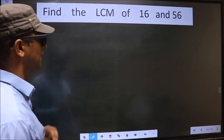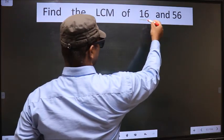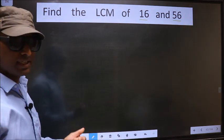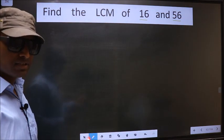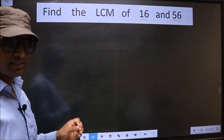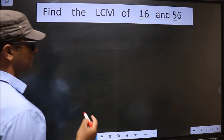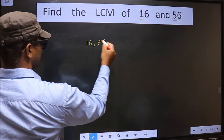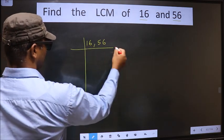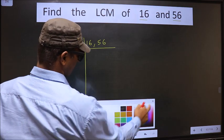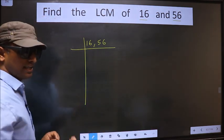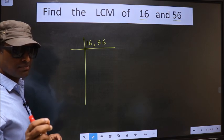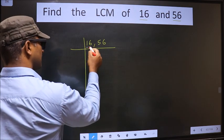Find the LCM of 16 and 56. To find the LCM, first we should frame it in this way. See, that is 16, 56. Now we should focus on the first number, that is 16.